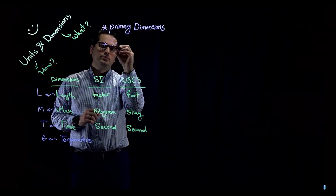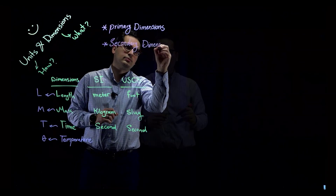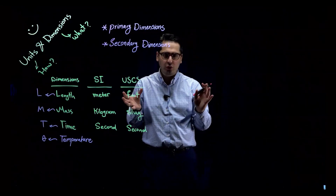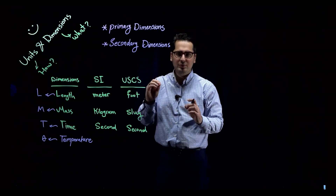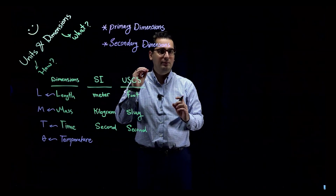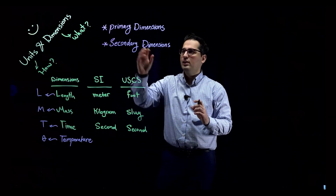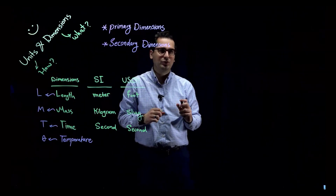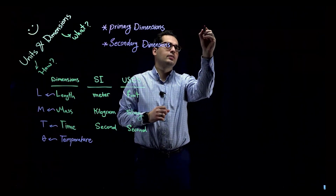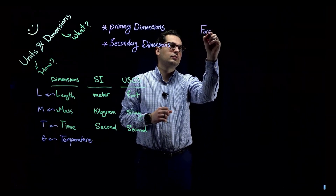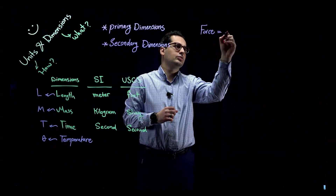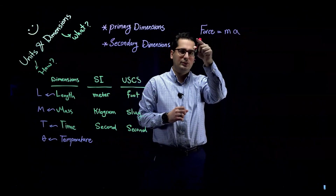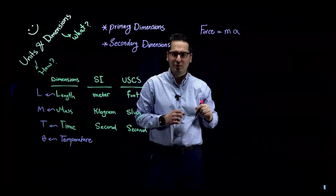Dimensions that can be derived based on primary dimensions are called secondary dimensions. For example, force is a secondary dimension, meaning we are able to derive force from our list of primary dimensions. Force is equal to mass times acceleration — this equation should be very familiar to you.